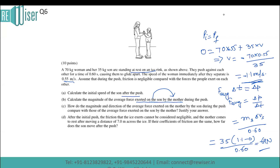Part (c): how do the magnitude and direction of the average force exerted on the mother by the son compare with the average force exerted on the son by the mother? According to Newton's third law, both forces are equal and opposite. The average force exerted on the mother by the son will be equal in magnitude and opposite in direction to the average force exerted on the son by the mother.